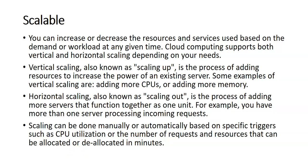Scalability means you can increase or decrease the resources and services used based on demand or workload at any given time. You can enable auto-scaling or do manual scaling of virtual machines, databases, web apps, and other services based on load. Cloud computing supports both vertical and horizontal scaling. Vertical scaling — also known as scaling up — is adding resources to increase the power of an existing server, such as adding more CPUs or memory. Horizontal scaling — scaling out — is the process of adding more servers that function together as one unit. Scaling can be done manually or automatically based on triggers such as CPU utilization or number of requests.